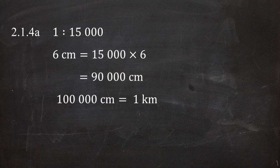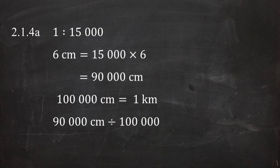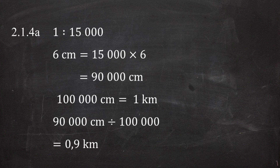We should remember that there are 100,000 centimeters in one kilometer. So 90,000 centimeters equals 90,000 divided by 100,000 centimeters per kilometer, and this equals 0.9 kilometers. So the actual distance between CPUT and Somerset Hospital is 0.9 kilometers.